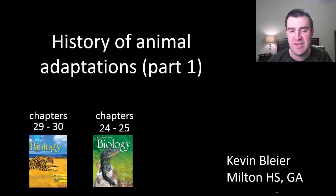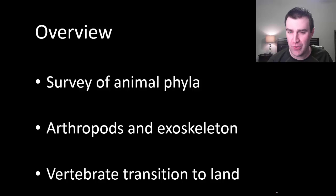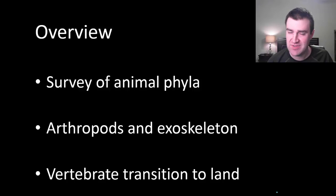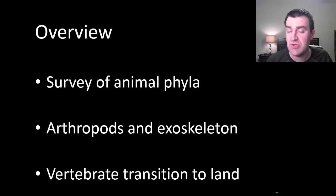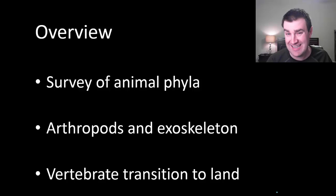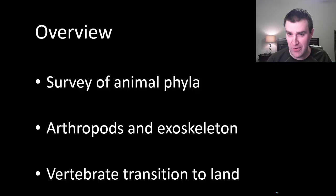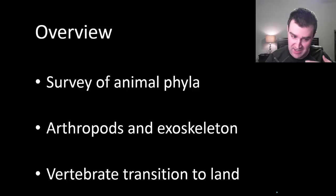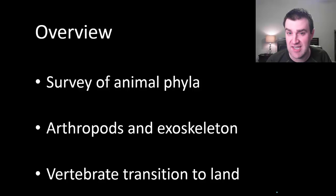In this video I'm going to discuss some of the major adaptations of a few animal groups. I'm going to broadly make sure you're aware of the different animal phyla — phylum is the singular, the group under kingdom. We're going to focus on two major groups, arthropods and vertebrates, because those are the two major groups that really dominate land. We'll talk about arthropod adaptations and how vertebrates gradually transitioned to land, with the discussion continuing in a second video.